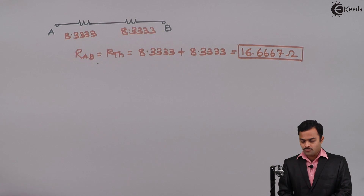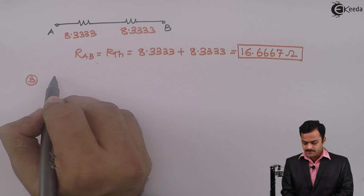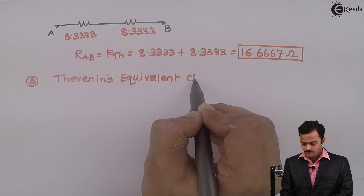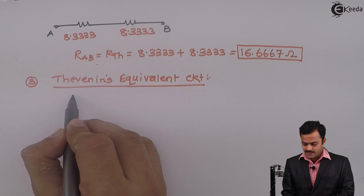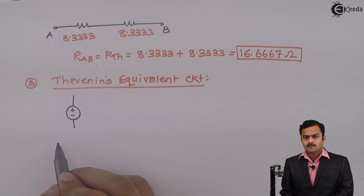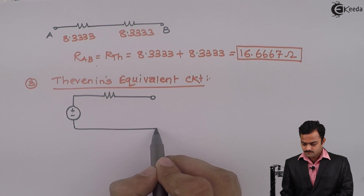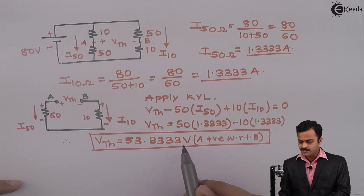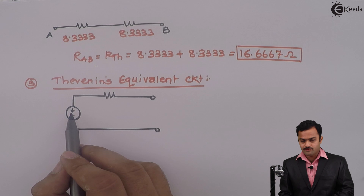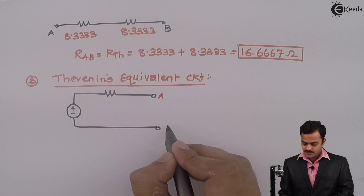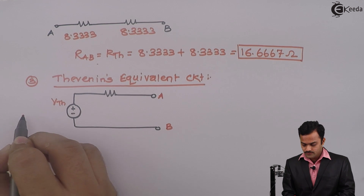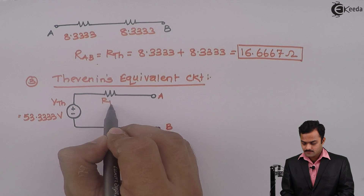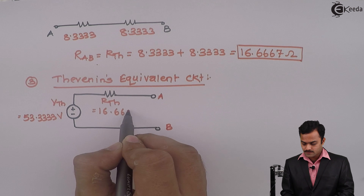Step two is over. Step three: draw the Thevenin equivalent circuit. The Thevenin equivalent consists of Vth in series with Rth. Vth = 53.3333 volts with A positive with respect to B, so the positive terminal is marked at point A. Rth = 16.6667 ohm in series. This is the complete Thevenin equivalent circuit.